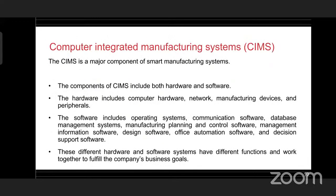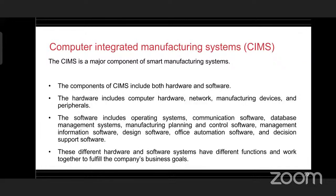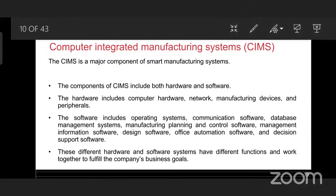Coming to smart manufacturing, computer integrated manufacturing systems — also called SIMS — are a major component. SIMS includes both hardware and software. The hardware includes computer hardware, network manufacturing devices, and peripherals. The software includes operating systems, communication software, database management systems, manufacturing planning and control software, management information software, design software, office automation software, and decision support software.